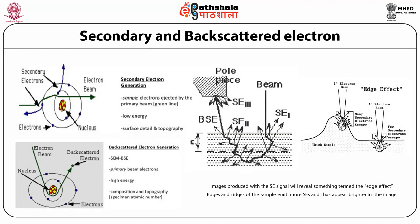Secondary electrons are produced from the emission of valence electrons of constituent atoms in the specimen when the incident beam enters. Since the energy of secondary electrons is very small, those generated in deep regions are quickly absorbed by the specimen. Only those generated at the top surface are emitted outside. This means secondary electrons are very sensitive to the surface, and the difference in brightness of the crystal surface is due to the difference in the incident angle of the electron beam. Thus, secondary electrons are used to observe the topography of the specimen surface.